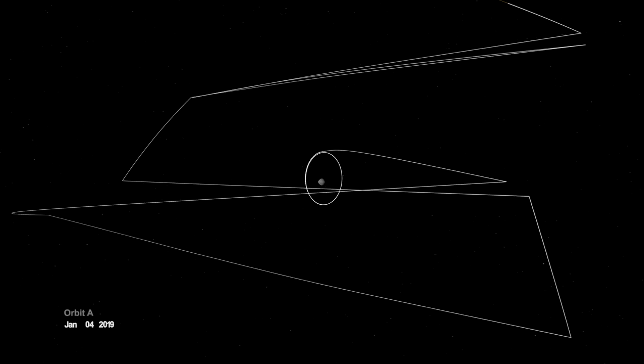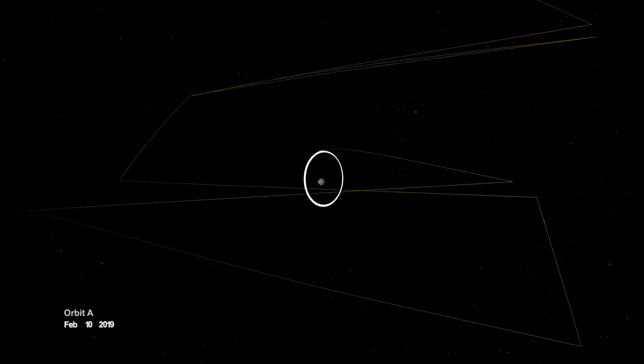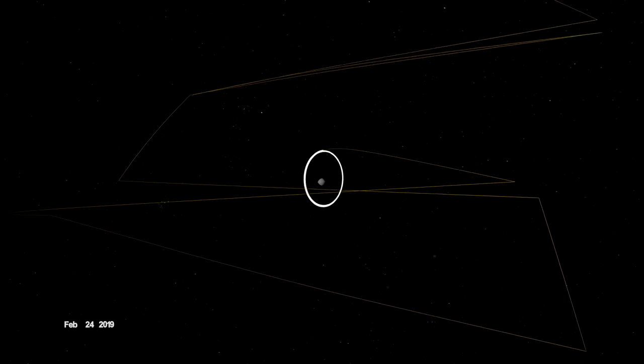On New Year's Eve, OSIRIS-REx was captured into orbit by Bennu's minuscule gravity, making it the smallest world ever to be orbited by a spacecraft.